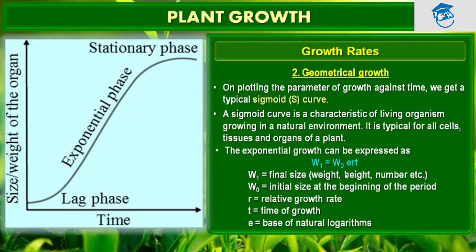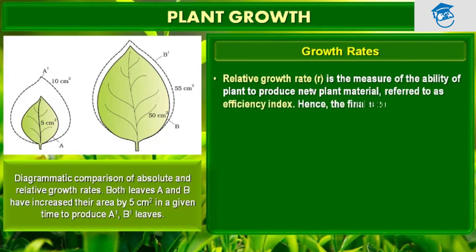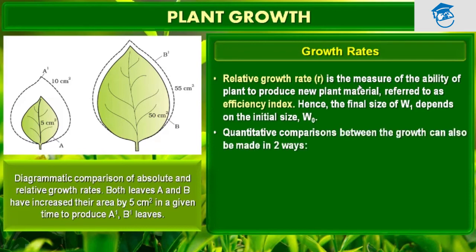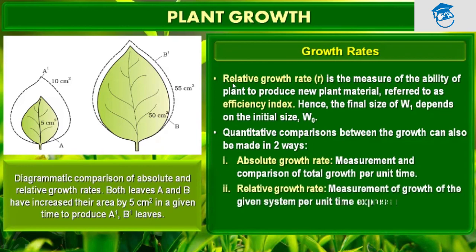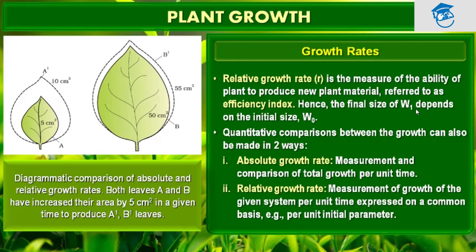Exponential growth can be expressed as W1 = W0 · e^RT. W1 is the final size — such as final weight, final height, or final number. W0 is the initial size at the beginning of the period. R is the relative growth rate, T is the time of growth, and e is the base of natural logarithms. The relative growth rate, denoted by small r, is the measure of the ability of a plant to produce new plant material, and is also referred to as the efficiency index. The final size W1 — increase in weight, height, or number — depends on the initial size W0.